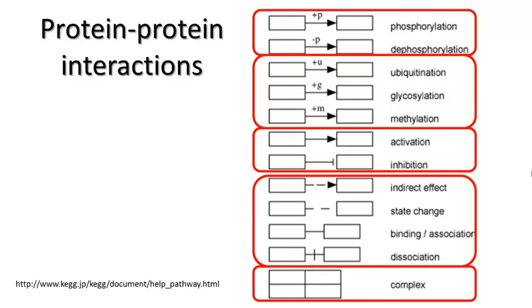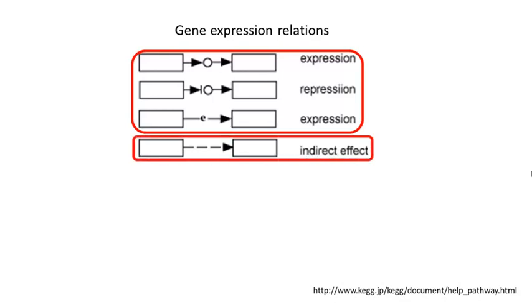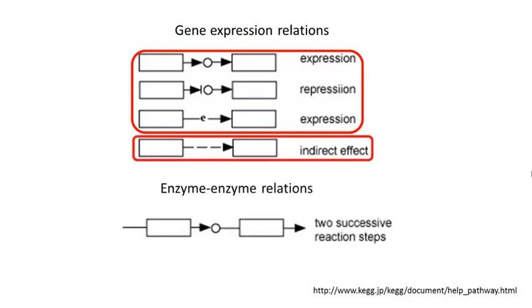Finally, protein complexes are shown as grids. A second type of interaction in the pathway is gene expression regulation, including expression and repression either through a chemical compound or directly or indirect regulatory effect. A third type of interaction is enzyme-enzyme relationships, such as two consecutive reaction steps.